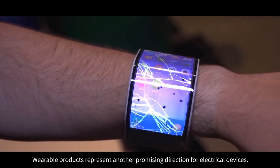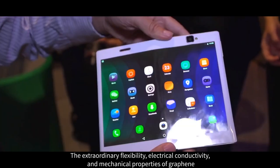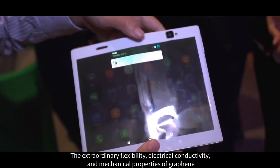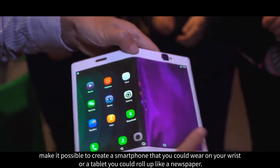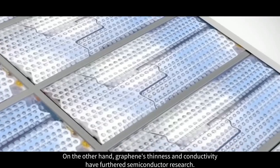Wearable products represent another promising direction for electrical devices. The extraordinary flexibility, electrical conductivity, and mechanical properties of graphene make it possible to create a smartphone that you could wear on your wrist or a tablet you could roll up like a newspaper.